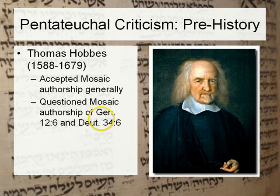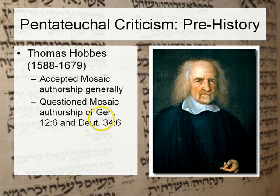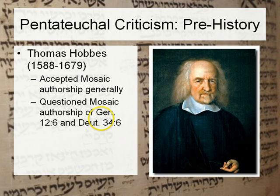The prehistory of liberal Pentateuchal criticism begins with Thomas Hobbes, who lived 1588 to 1679. He accepted Mosaic authorship generally, but questioned authorship of texts like Genesis 12:6 and Deuteronomy 34:6. Genesis 12:6 says 'the Canaanite was then in the land' — Hobbes argued archaeology finds no evidence of Canaanite occupation of Palestine until the 1200s BC, while Abraham is living in the 1800s BC. Therefore Moses couldn't have written that because it wasn't historically accurate. Of course, this assumes absence of evidence is evidence of absence.